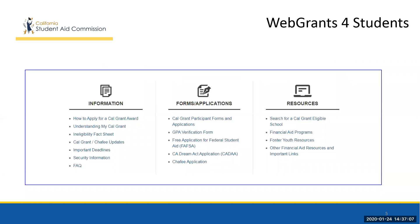You'll also notice that the Web Grants for Students website has several useful links on the same page. This information is divided into three categories, putting all of the most important information at a student's fingertips. One of the great things about the newly designed website is how it consolidates information, making it easier for the end user to navigate and find what they need.